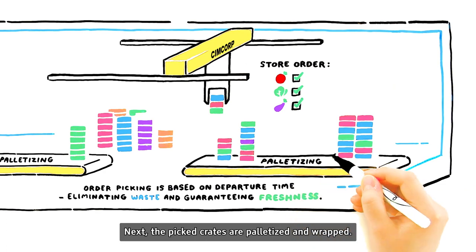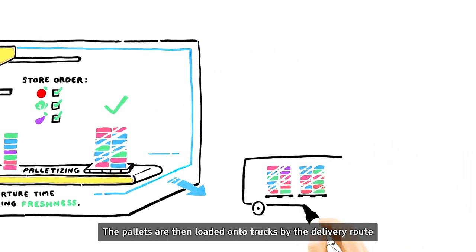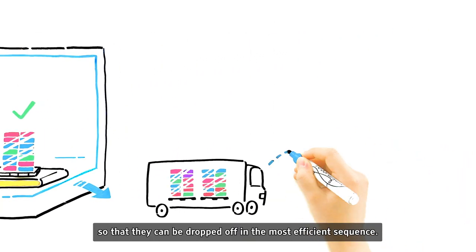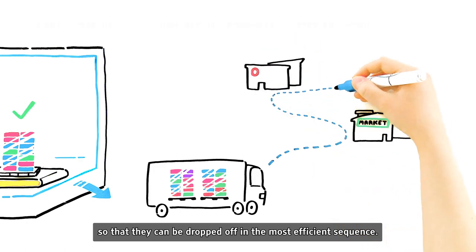Next, the picked crates are palletized and wrapped. The pallets are then loaded onto trucks by the delivery route, so that they can be dropped off in the most efficient sequence.